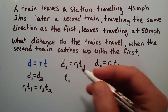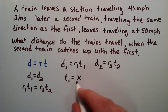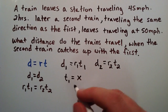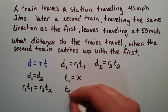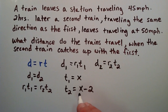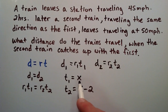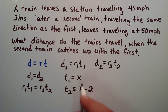We'll say t1 equals x, so x equals the amount of time that train 1 has traveled. Then t2 equals x minus 2. Train 2 is traveling the same amount of time as train 1 — that's the x — but we subtract the two hours it waited at the station before taking off. So whatever time train 1 has traveled, train 2 has traveled two hours less.